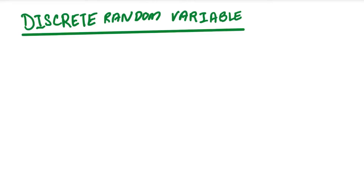It is still part of the syllabus that you need to know. We're going to go through what DRV is, and after this we're going to look at binomial distribution as well as normal distribution, which kind of extracts some prerequisite knowledge you need to have from this chapter on discrete random variables.